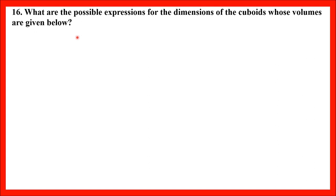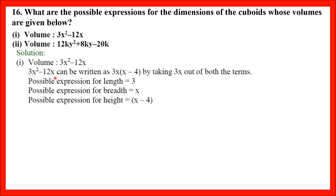Question number 16: What are the possible expressions for the dimensions of a cuboid whose volumes are given? Part 1: Volume = 3x² − 12x. Factorize by taking 3x common: 3x(x − 4). So the three possible dimensions are 3, x, and (x − 4).